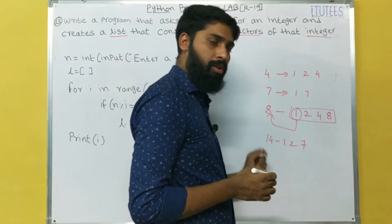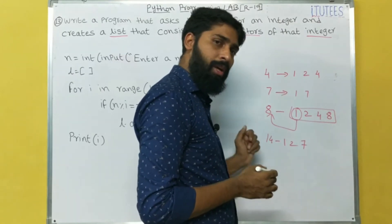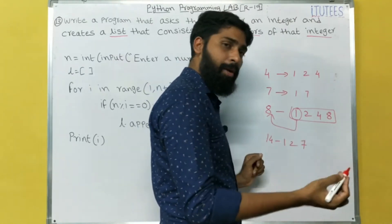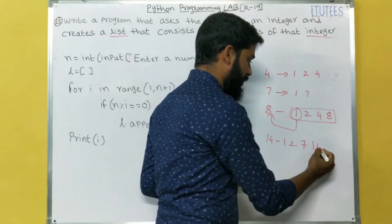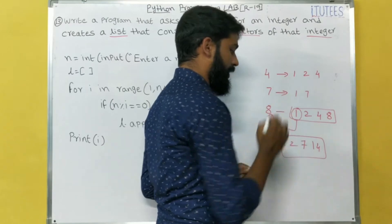14 divided by 8, no. 14 divided by 9, no. 14 divided by 10, no. 11, 12, 13. And 14 divided by 14, yes. So 14 is another factor. Okay, so in this way, you are going to find the factors.